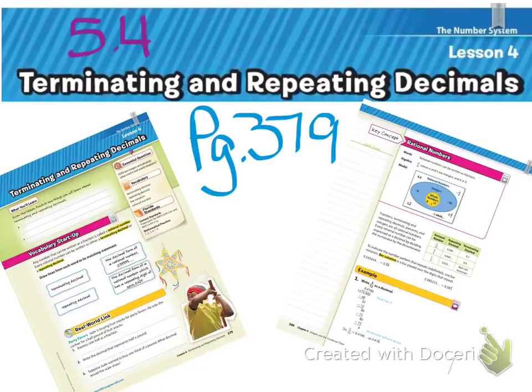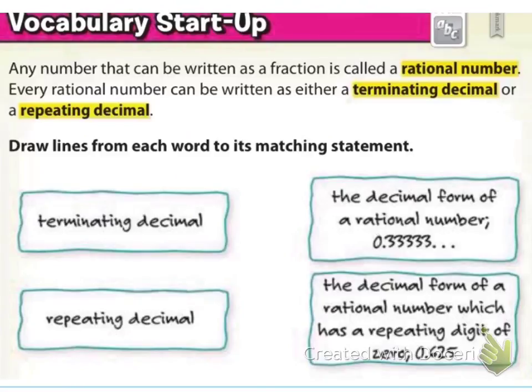We're going to start on section 5.4, Terminating and Repeating Decimals, starting on page 379. We'll begin with a little vocabulary start-up. Any number that can be written as a fraction is called a rational number, and every rational number can be written as either a terminating decimal or a repeating decimal.